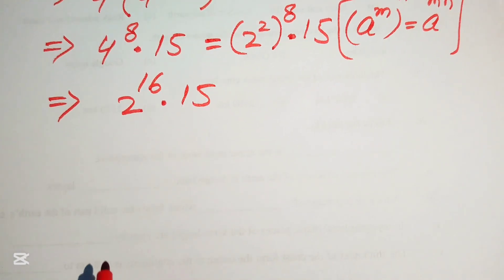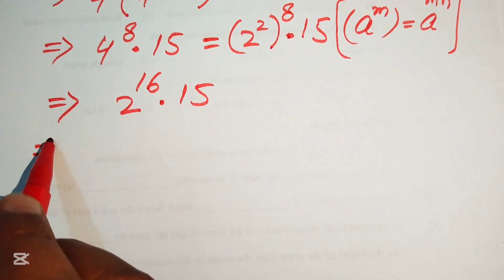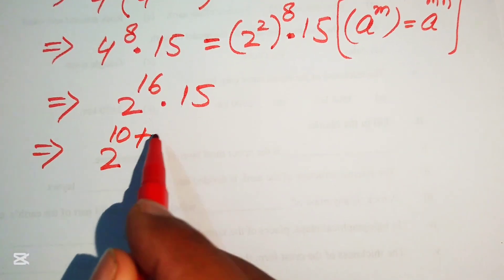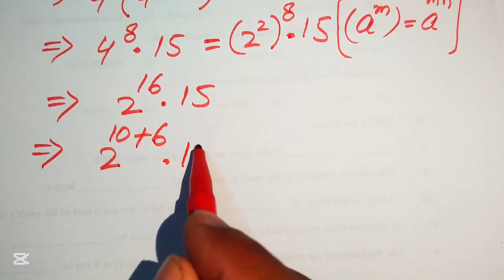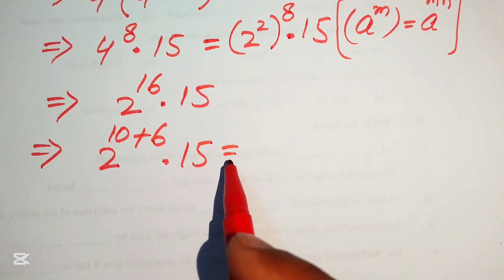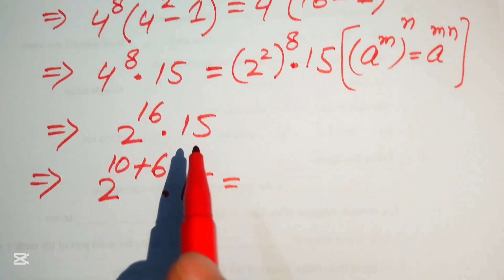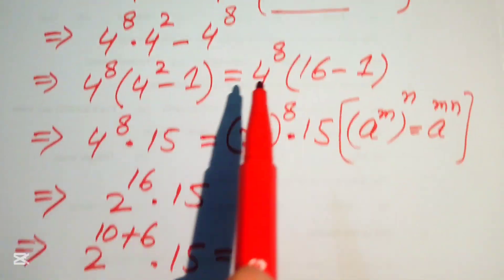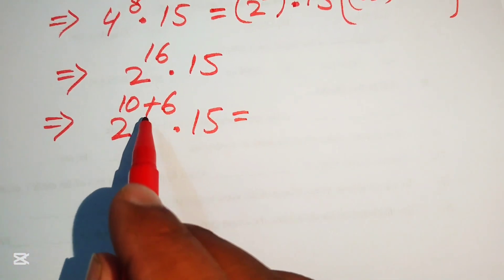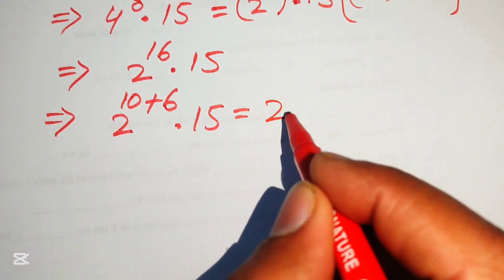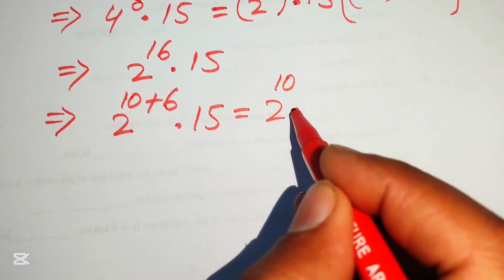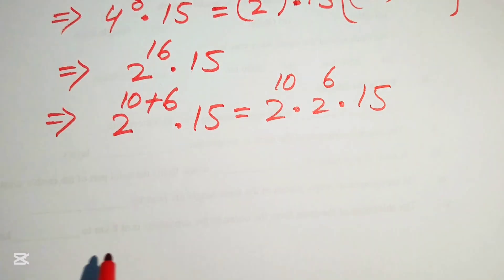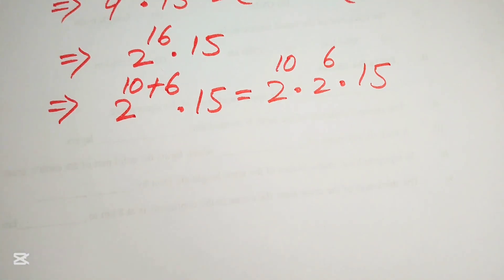We need more simplification, so we write 2 to the power of 16 as 2 to the power of 10 plus 6, multiplied by 15. Applying the exponent law again, we break this exponent and write it as 2 to the power of 10 multiplied by 2 to the power of 6, multiplied by 15.